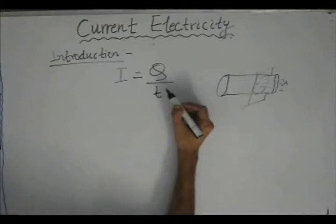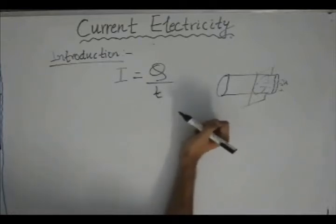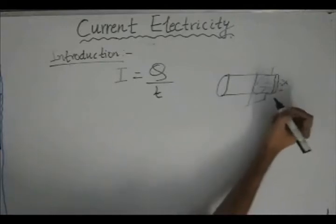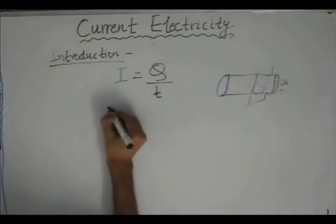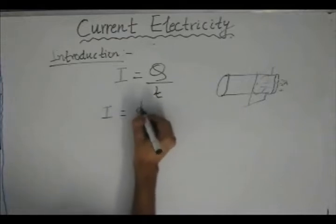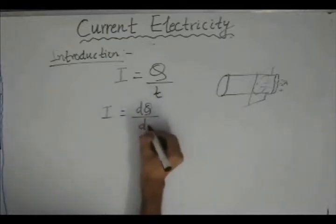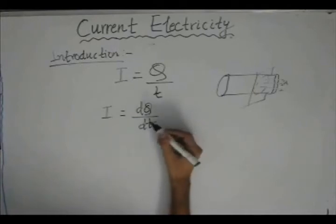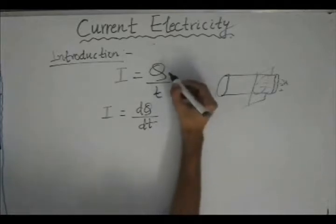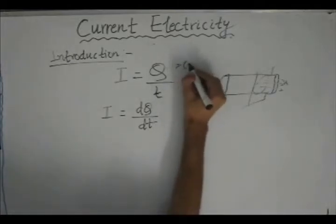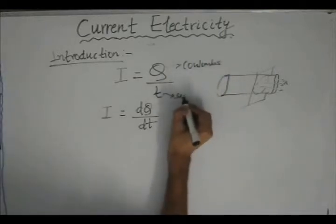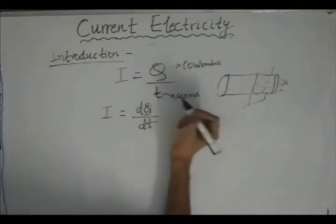This definition is for a steady flow of current. If there is a differential amount of charge passing through a cross section, then in the differential form we can write the current as dq/dt — that is, the rate of change of charge with respect to time — where charge is measured in coulombs, time is in seconds, and the unit of current is ampere.